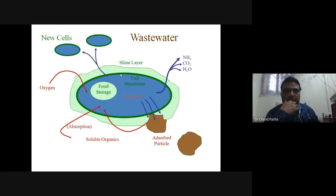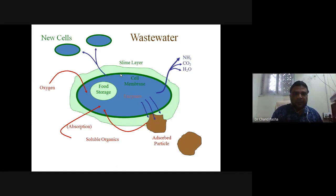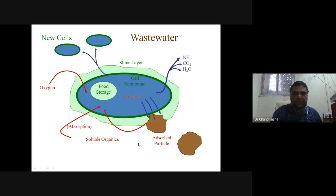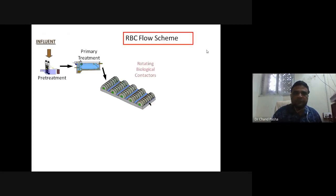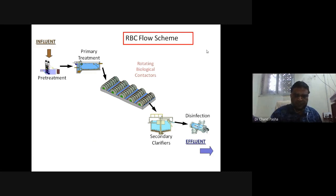Microorganisms grow as slimy layers (mucus cells) on the RBC surfaces. They absorb nutrients from sewage, digest them, and release ammonia and carbon dioxide into the atmosphere. After RBC treatment, the sewage passes to a secondary clarifier where heavier materials settle, and the effluent exits.